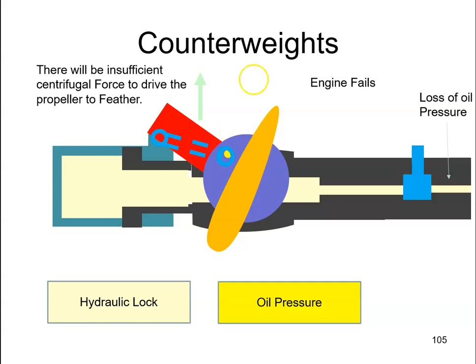But the engine has failed, so the propeller will essentially end up not rotating. It will probably windmill, but there won't be sufficient centrifugal force to bring the propeller to the feather position. So we need to help it along to the feather position.